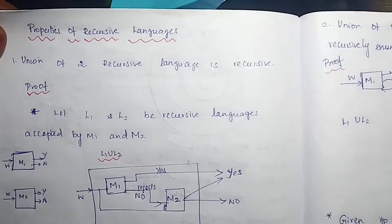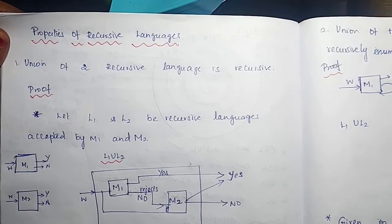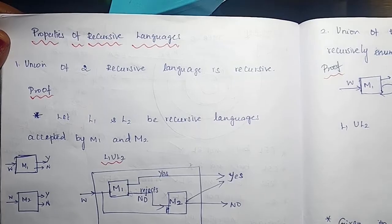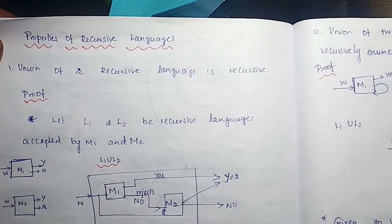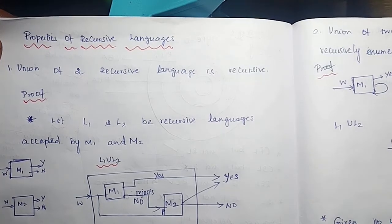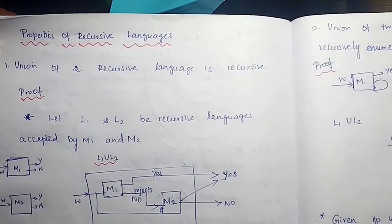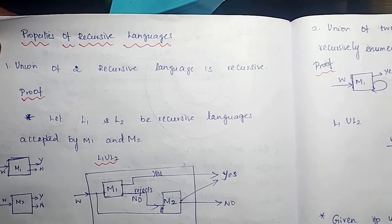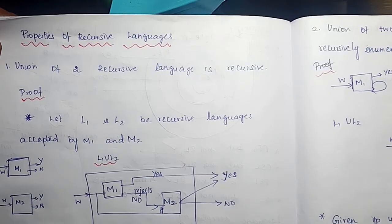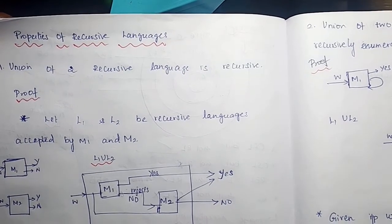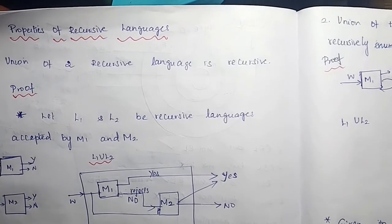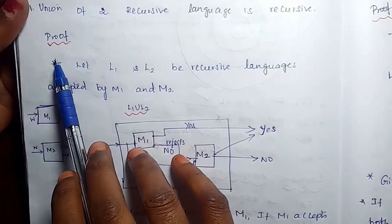Welcome to the session. We are going to see the properties of recursive language. From the previous lecture, a language is recursive if there exists a Turing machine such that it accepts strings present in the language and rejects strings not in the language. In either case, the Turing machine halts and provides the result, which is the desirable property.